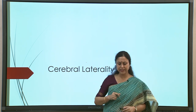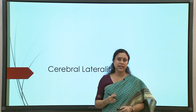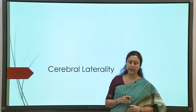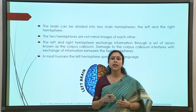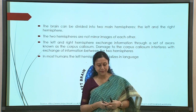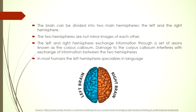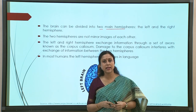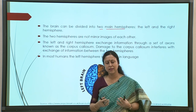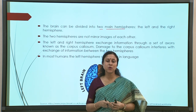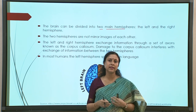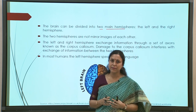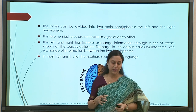Before going into laterality with respect to bilingualism, let us understand what laterality is to begin with. Cerebral laterality is about looking at the two hemispheres in terms of the functions they are known to serve. The brain is divided into two main hemispheres — the left hemisphere and the right hemisphere — but unlike many other paired organs in the human body like kidneys or lungs, the two hemispheres are not exactly a mirror image of each other; they are different and distinct in many ways.